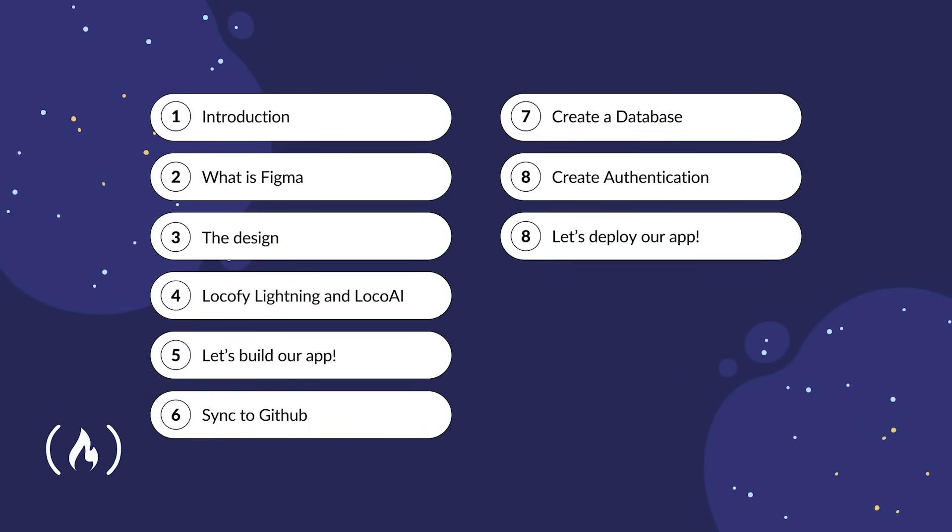Here is an outline of what we'll be covering in this course. We'll start with the introduction, followed by what exactly is Figma, then we'll look at the design, followed by Locofy Lightning and LocoAI — that's when we'll start building our app. We'll learn how to sync our app to GitHub, create a database, build out a backend with authentication, and finally deploy our app. The app will use React for the frontend, Node.js for the backend, MongoDB for database management, and Netlify to deploy.